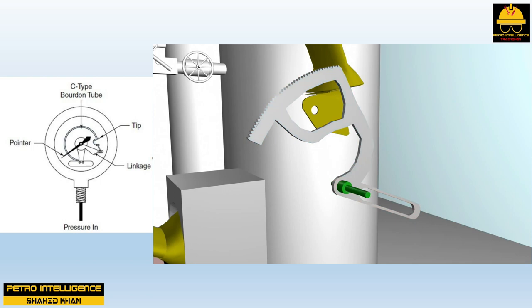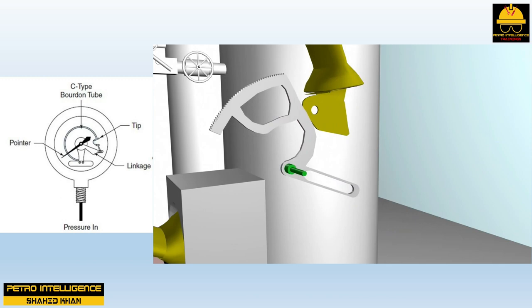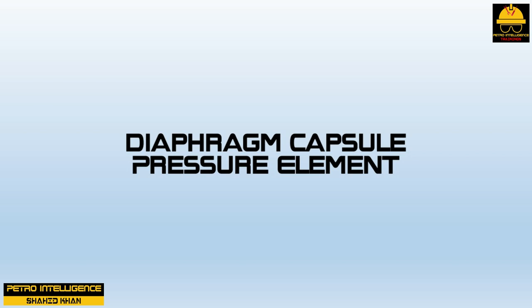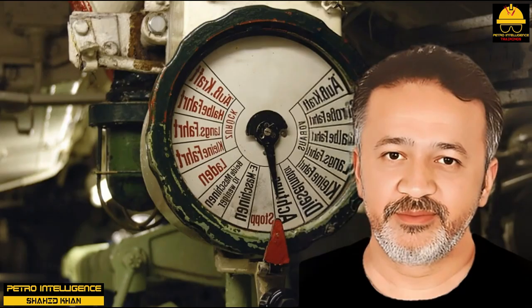The main difference between Bourdon tube types is in the actual shape of the pressure element. In an automatic control system, a spiral-type Bourdon can be connected to a transmitter; as the spiral element responds to pressure changes, the transmitter sends a signal to the controller, which sends a signal to the control valve.